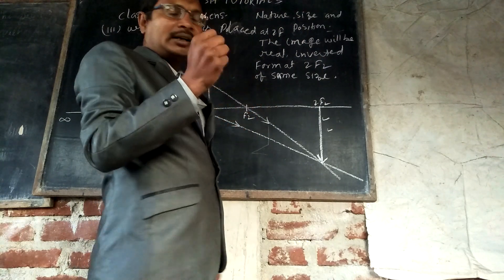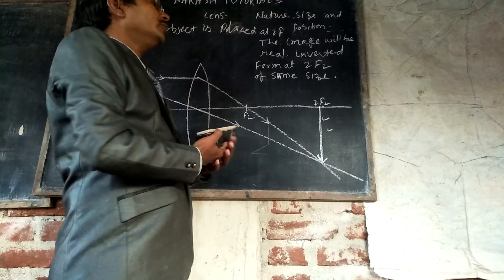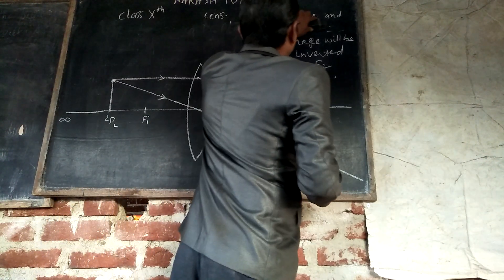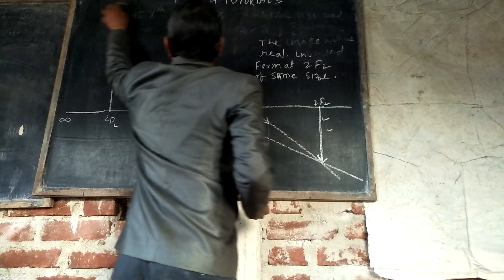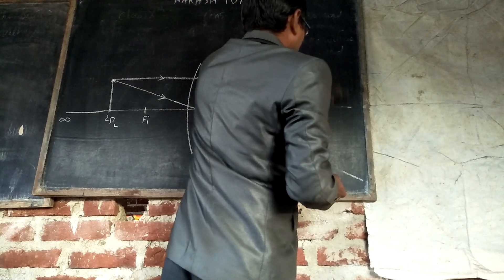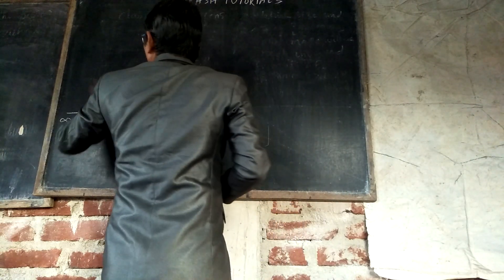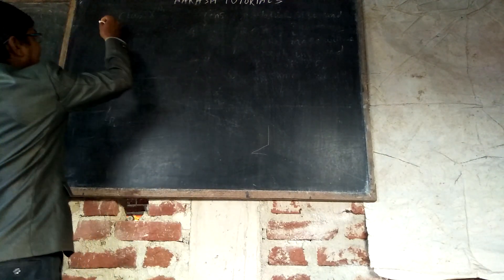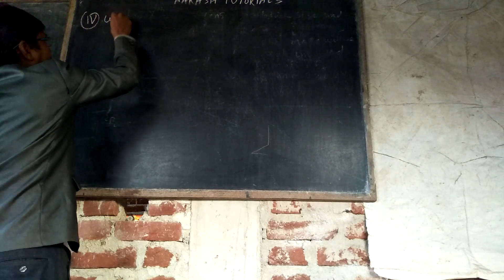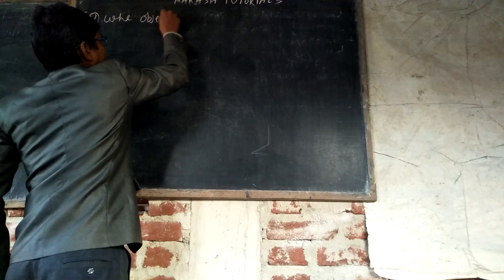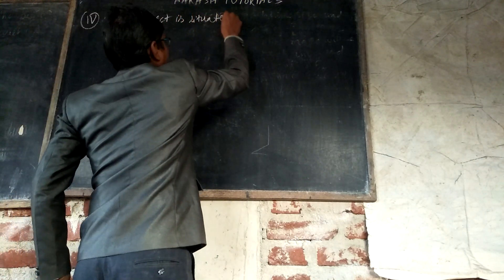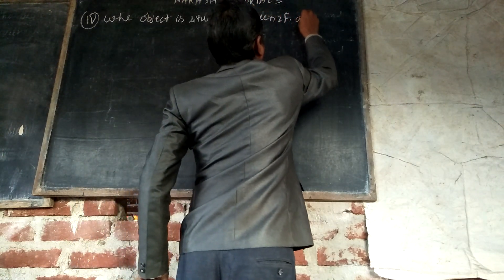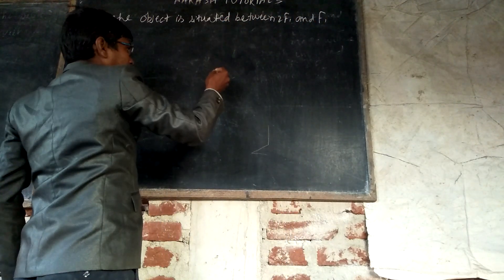As discussed in our previous class, when the object moves towards the lens, the image moves away from the lens and the size of the image keeps increasing. Now, our fourth case: when the object is situated between 2F₁ and F₁.